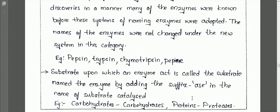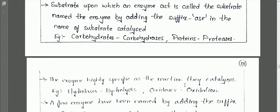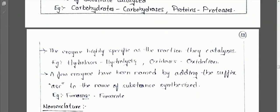The word enzyme was first given by the scientist Kühne in the year 1878. Enzymes are substances produced in living organisms, and they act as catalysts for specific biochemical reactions. As we already know, enzymes are highly specific in nature — a particular enzyme works on a suitable substrate. Each enzyme is responsible for a specific biochemical reaction; not all enzymes work on all kinds of reactions.